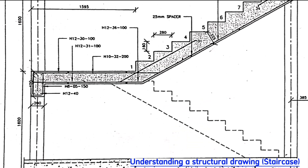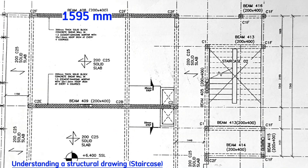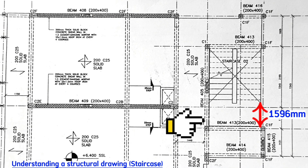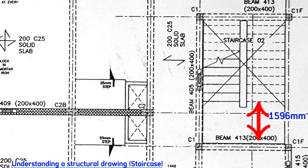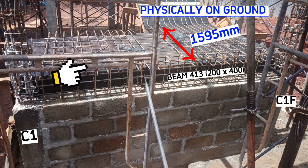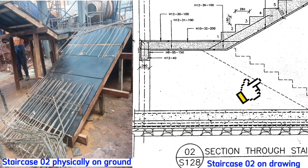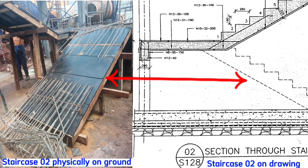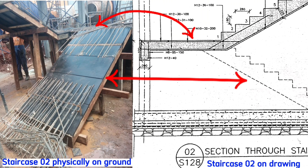The drawing also directs us that this landing will be at 1 meter 595 millimeters from column C1 and column C1F, connecting to this beam here. Physically, it will still be 1 meter 595 millimeters from column C1 and C1F with this beam here. This part here is this one here, whereas this one here is this one physically on the ground.